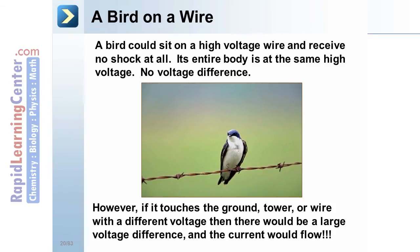On the other hand, if that same bird simultaneously touches the ground, the tower, or a wire with a different voltage, then there would be a large voltage difference, and the current would flow.